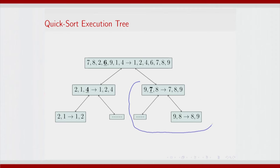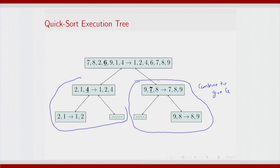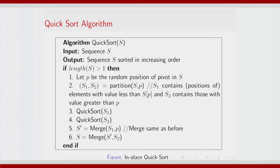This is the g that got combined. You have already combined all the subarrays in this subtree to give you l, and finally you invoke a combine of l, g and e at the top level, where e is a singleton set {6}.